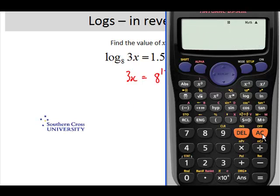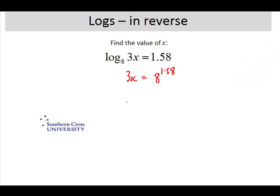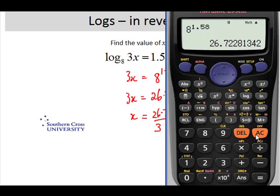So bring up our calculator, press clear. So 8 to the power of 1.58 equals 26.72 I think we'll stay at. So 3x equals 27.72 which means that to find x we need to divide both sides by 3 and we get 27.72 divided by 3. Bring our calculator back up. I think we'll just leave the answer that we had there and just keep going with this. Divide by 3 equals, so 8.9 or 8.91.